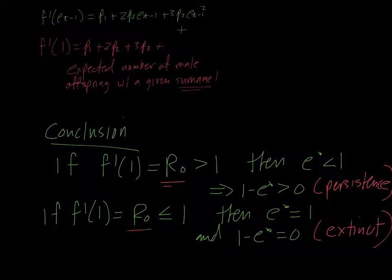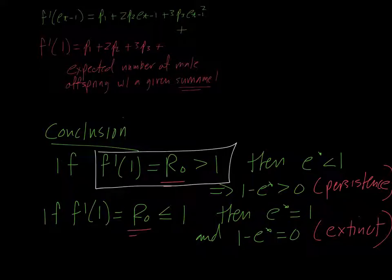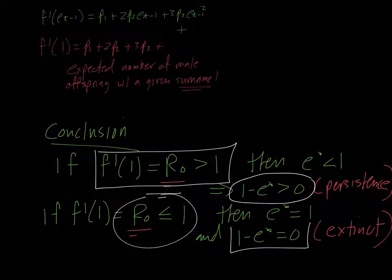And this R0 frequently comes up in the literature for epidemiology. It's this idea of replacing yourself. If the average male more than replaces himself in the family lineage, then you have some non-zero opportunity that the family will live on forever. If the average male cannot, then the name isn't going to be particularly long-lived.